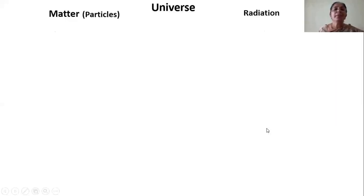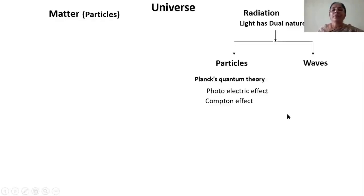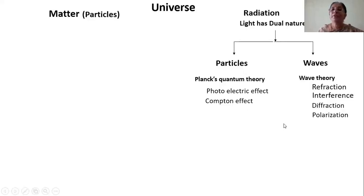Before starting the topic, let us review about matter waves. We know the universe is made up of matter and radiation. We know radiation has dual nature — it has particle nature and it has wave nature. The particle nature could be understood from Planck's quantum theory, the photoelectric effect, and Compton effect. The wave nature of light could be understood from phenomena like refraction, interference, diffraction, and polarization.